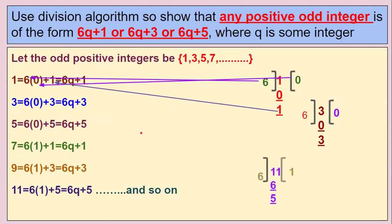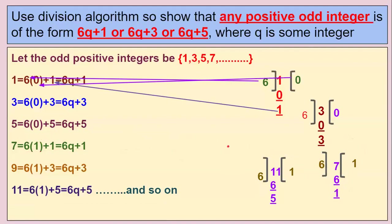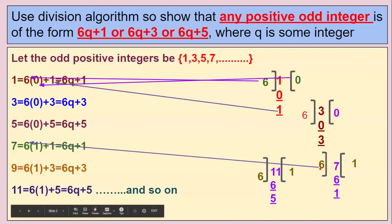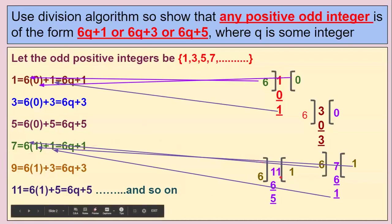Now take another odd number: 7. When you divide 7 by 6, six ones are 6, and the remainder is 1. So this can be written as 6 × 1 + 1, which is in the form of 6q + 1. And when you take 11, six ones are 6, you get remainder 5. So 11 = 6 × 1 + 5, which is in the form of 6q + 5.